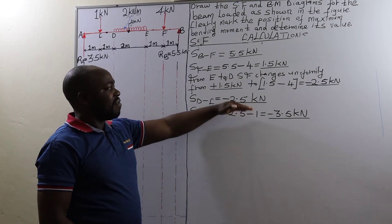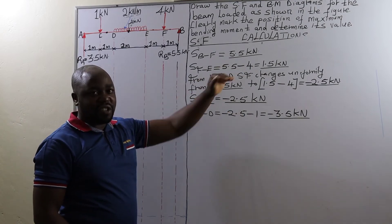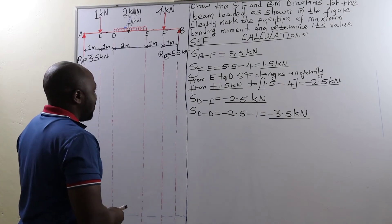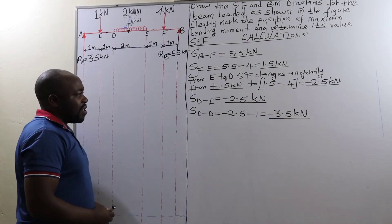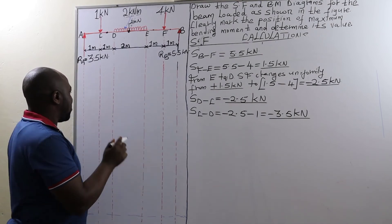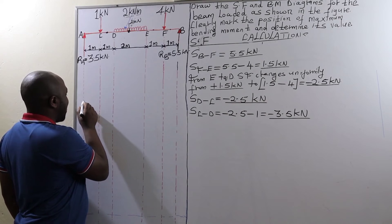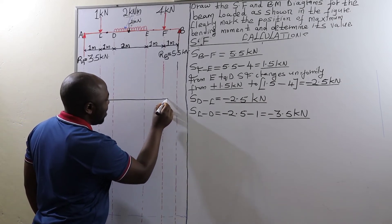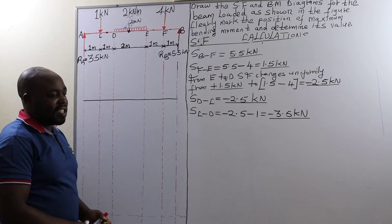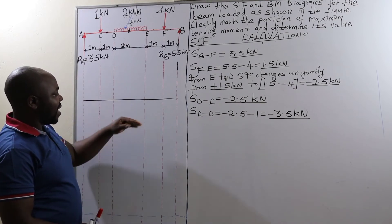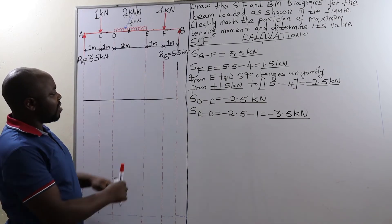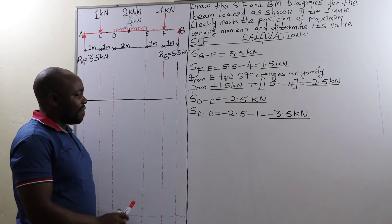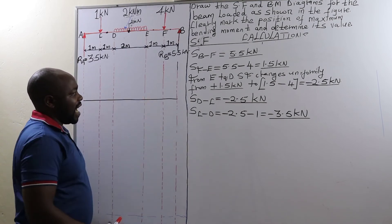After determining the value of the shear forces, we are going to use these shear force calculations to plot a shear force diagram. For us to plot the shear force diagram, we are going to draw a horizontal line. Remember, this horizontal line separates positive shear forces drawn above the line and negative shear forces drawn below this line.